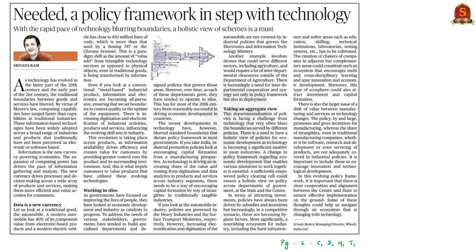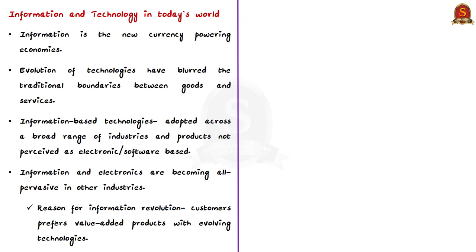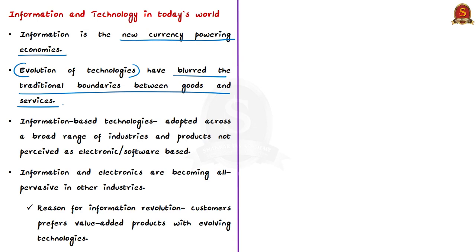The next editorial article stresses the role of information and technology in different industries and what policy reforms are required. Information and communication technologies have crept into everyday life; information is the new currency powering economies, and the expansion of computing power has driven information gathering and analysis. The evolution of technologies has blurred traditional boundaries between goods and services. Information-based technologies have been widely adapted across a broad range of industries that traditionally were not perceived as electronic or software-based. For example, a modern vehicle has 40% of its components from electronic-based products.